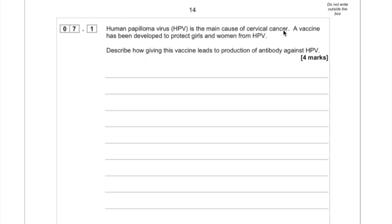Human papillomavirus is the main cause of cervical cancer. A vaccine has been developed to protect girls and women from HPV. Describe how giving this vaccine leads to the production of antibody against HPV.